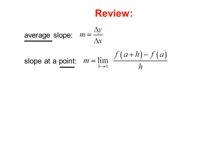Review: The average slope is delta y over delta x. The slope at a point, we use the difference quotient: m equals the limit as h goes to 0 of f(a plus h) minus f(a) over h. These are often mixed up by calculus students, especially on the first test.